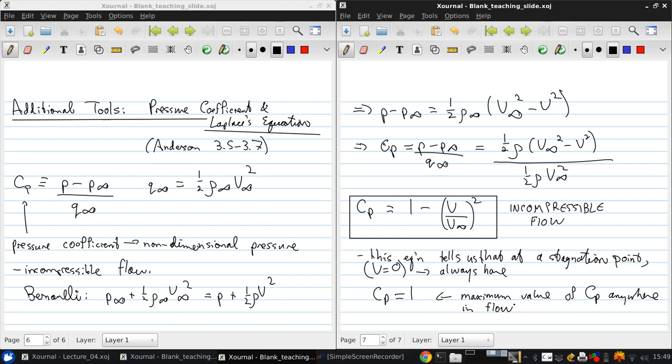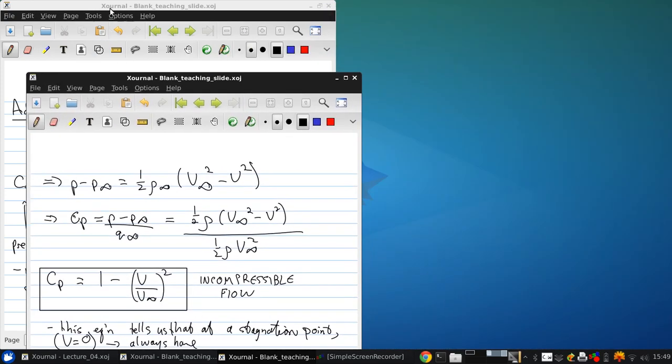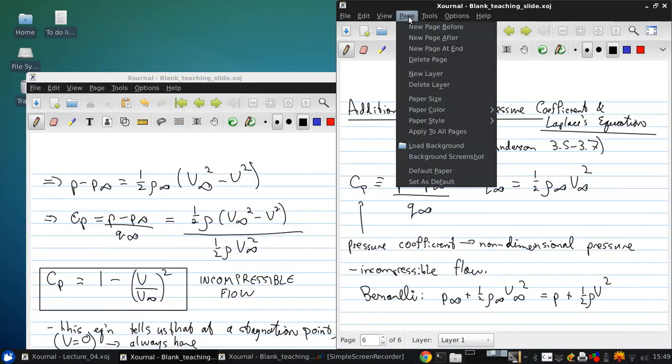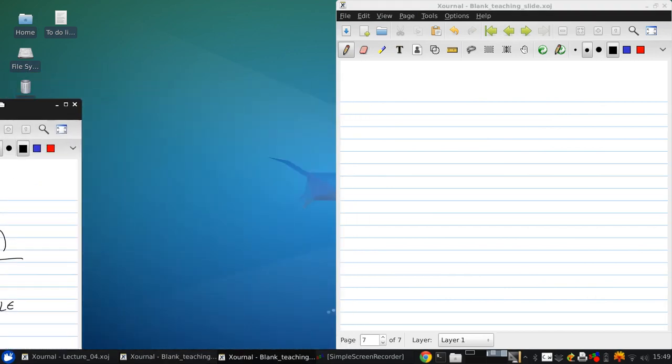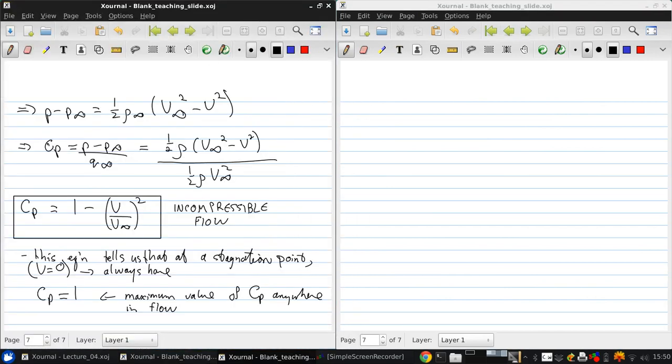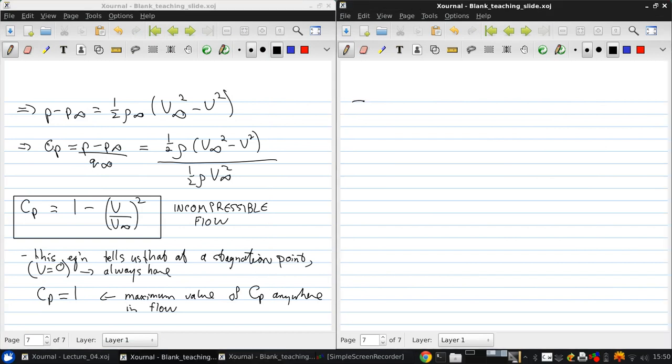That means that this is the maximum value of Cp anywhere in any flow. There's no way that Cp can be greater than one for an incompressible flow. And if V is larger than V infinity, then we see that the pressure coefficient will become negative. And that's okay.